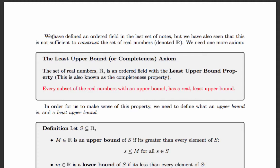In fact, any ordered field that has the least upper bound property is isomorphic to the set of real numbers. In other words, you can prove that there is a one-to-one and onto relationship between any ordered field that satisfies the least upper bound property and the set of real numbers. So this is the last axiom that axiomatically creates the set of real numbers. It's the property that every subset of the real numbers that has an upper bound also has a real least upper bound.